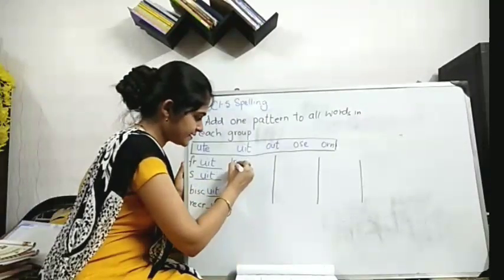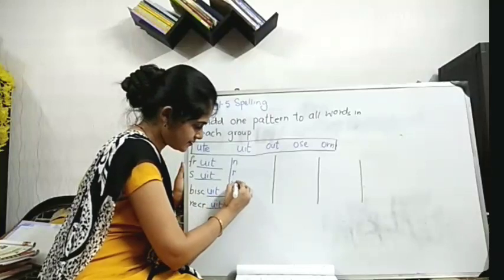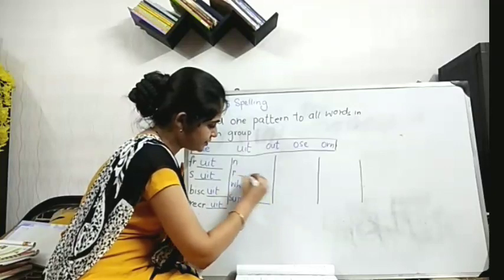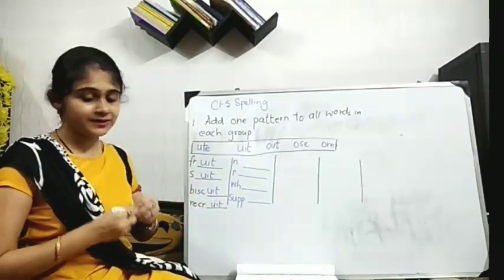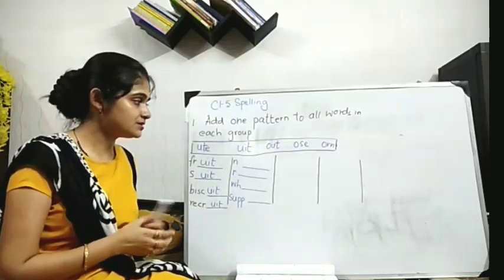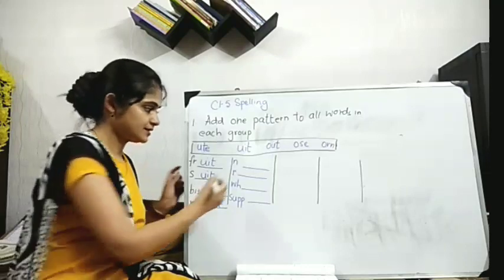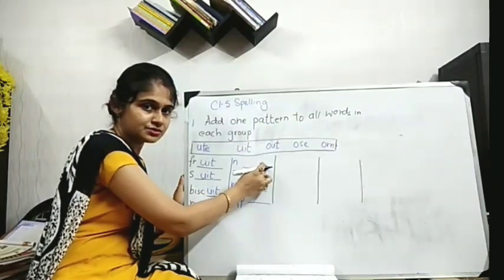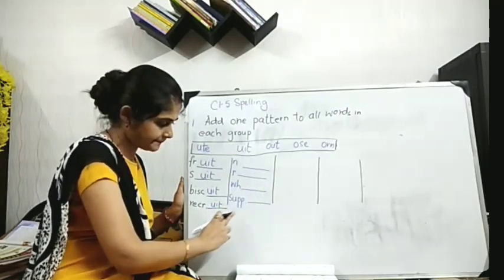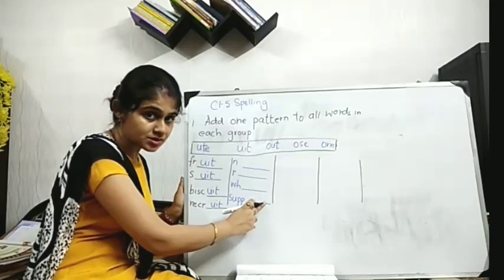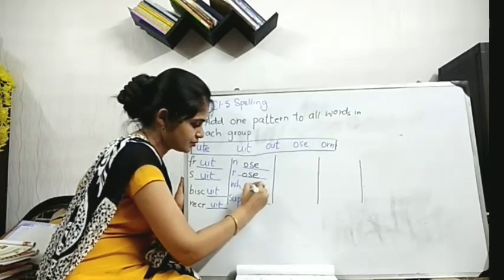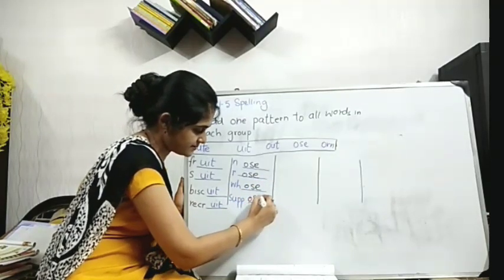Next one: if I give N, R, WH, SUPP. So what you will do here - find out which one will suit to all the words, all the words, one pattern. O-S-E, what do you say? N-O-S-E is nose, R-O-S-E is rose, W-H-O-S-E is whose, S-U-P-P-O-S-E is suppose. So let's write O-S-E to all the patterns. Same pattern.